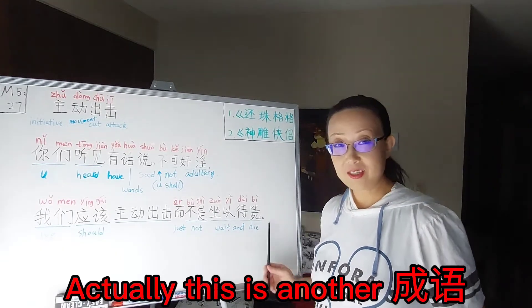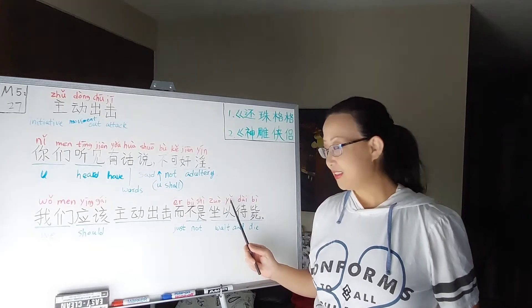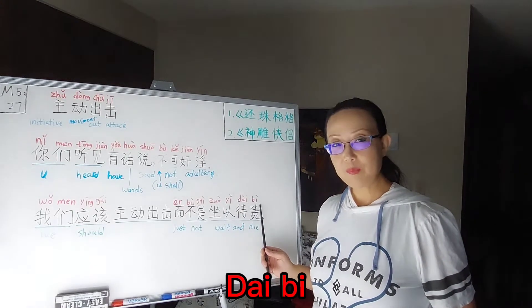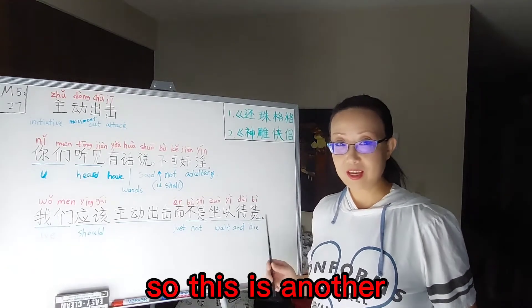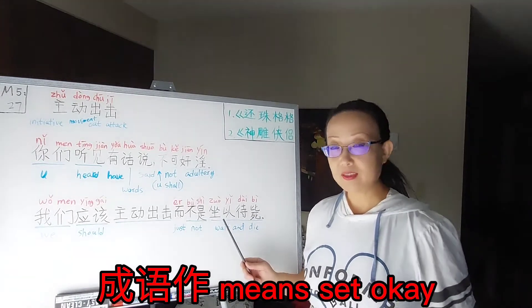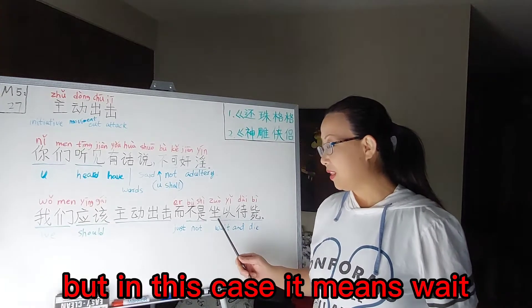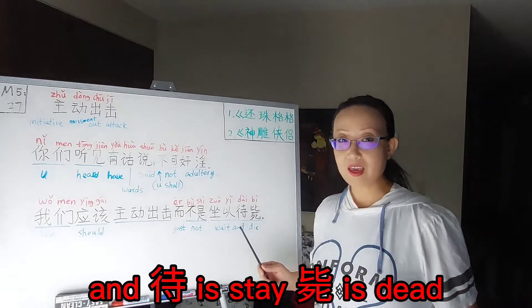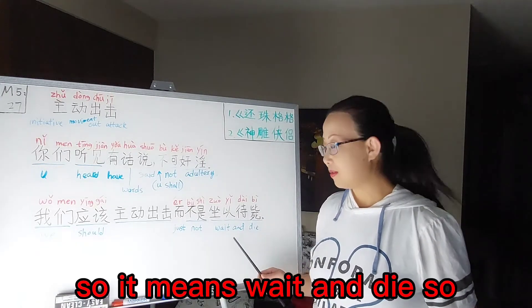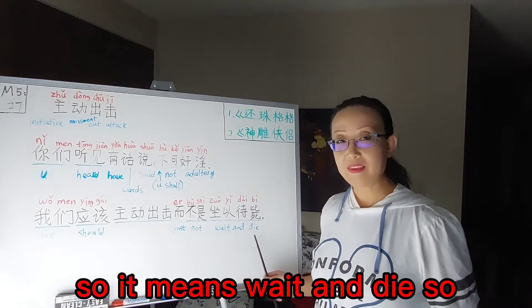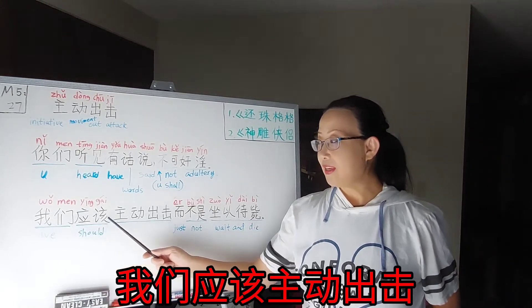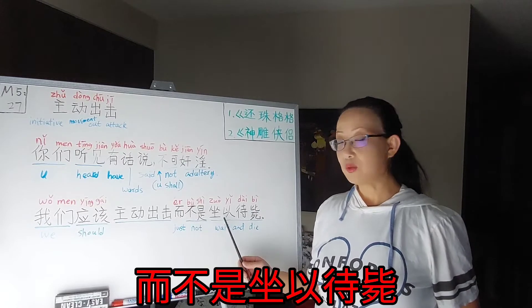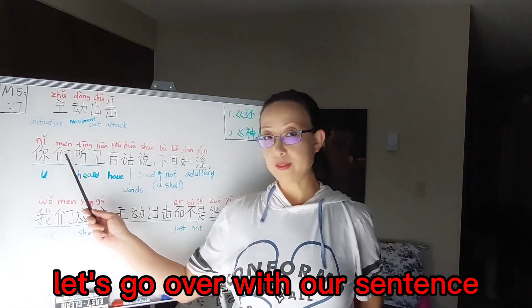自我做 — actually this is another 成语: 坐以待毙. 做 means 'sit', but in this case it means 'wait'. 待 is 'stay', 毙 is 'dead'. So it means 'wait and die'. So the full sentence is: 我们应该主动出击，而不是坐以待毙。